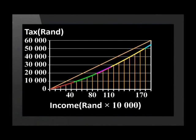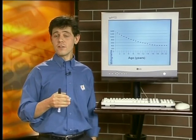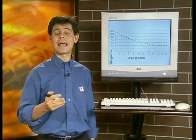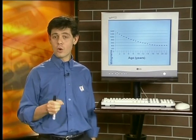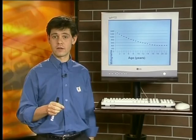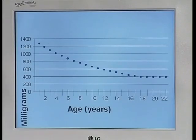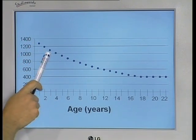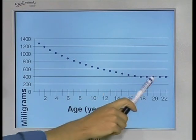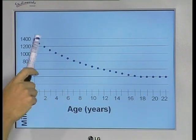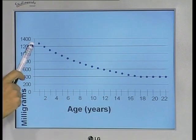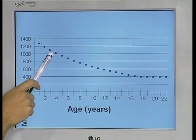As with tax calculations, there are many situations when the relationship between variables is not linear. For a nutritional supplement that we'll call Vitamin AA, the body has different requirements at different ages. The pamphlet shows this graph. To interpret the graph we need to look at a number of aspects. All of the graphs we looked at thus far have consisted of solid, continuous lines. This graph, however, is made up of a series of discrete points.